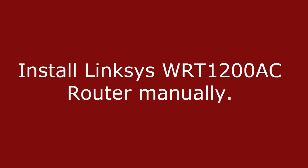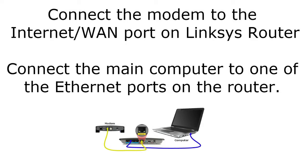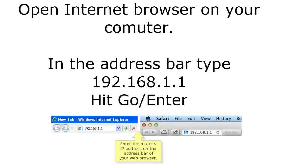First, connect the modem to the internet or WAN port on the Linksys router using one ethernet cable. Then take another ethernet cable and connect your main computer or laptop to one of the four LAN ports on the Linksys router — you will see port numbers one, two, three, and four. Connect your computer to any one of those four ports.